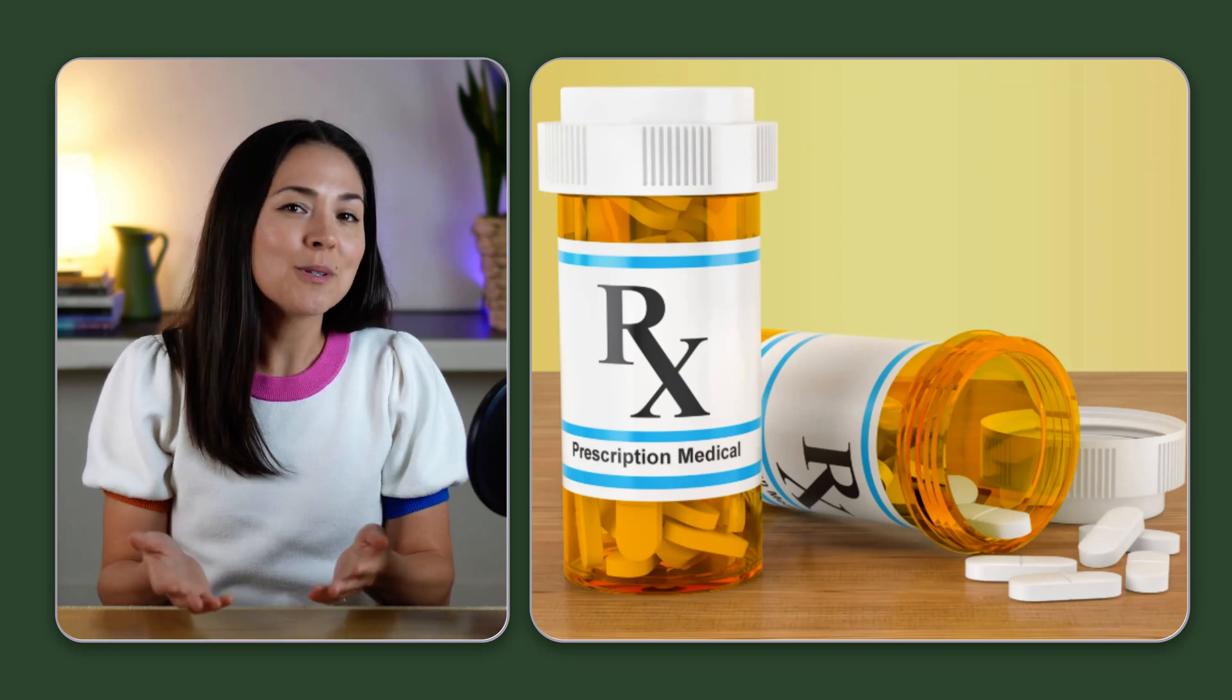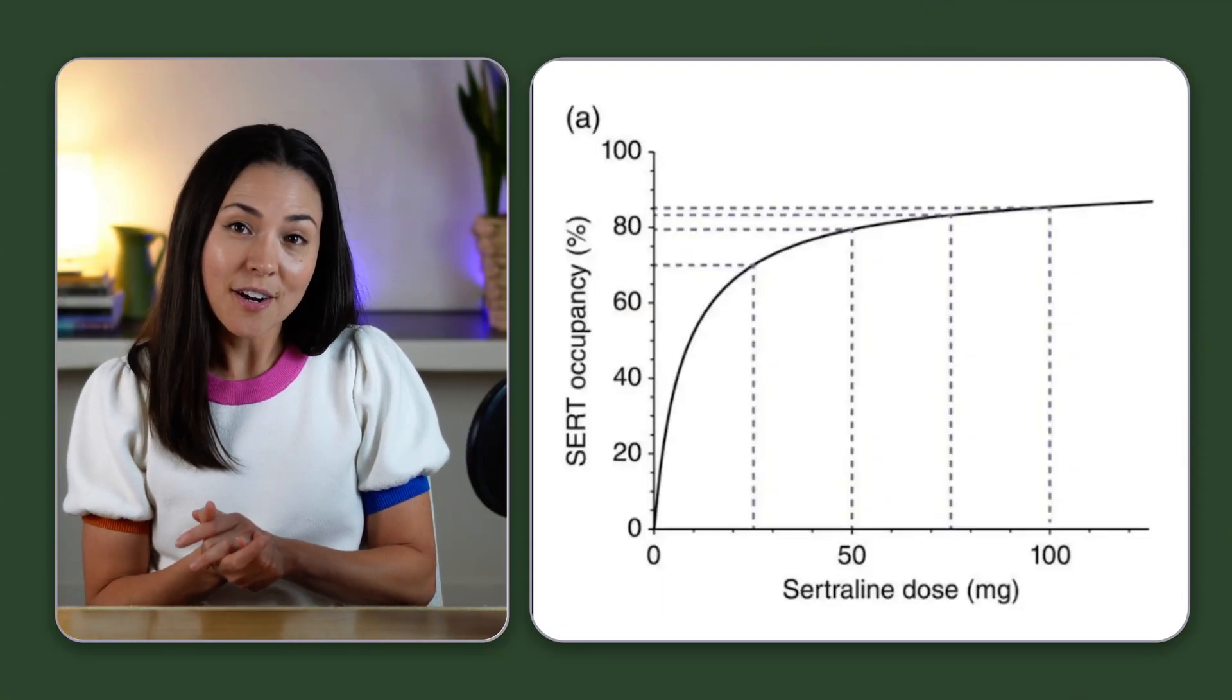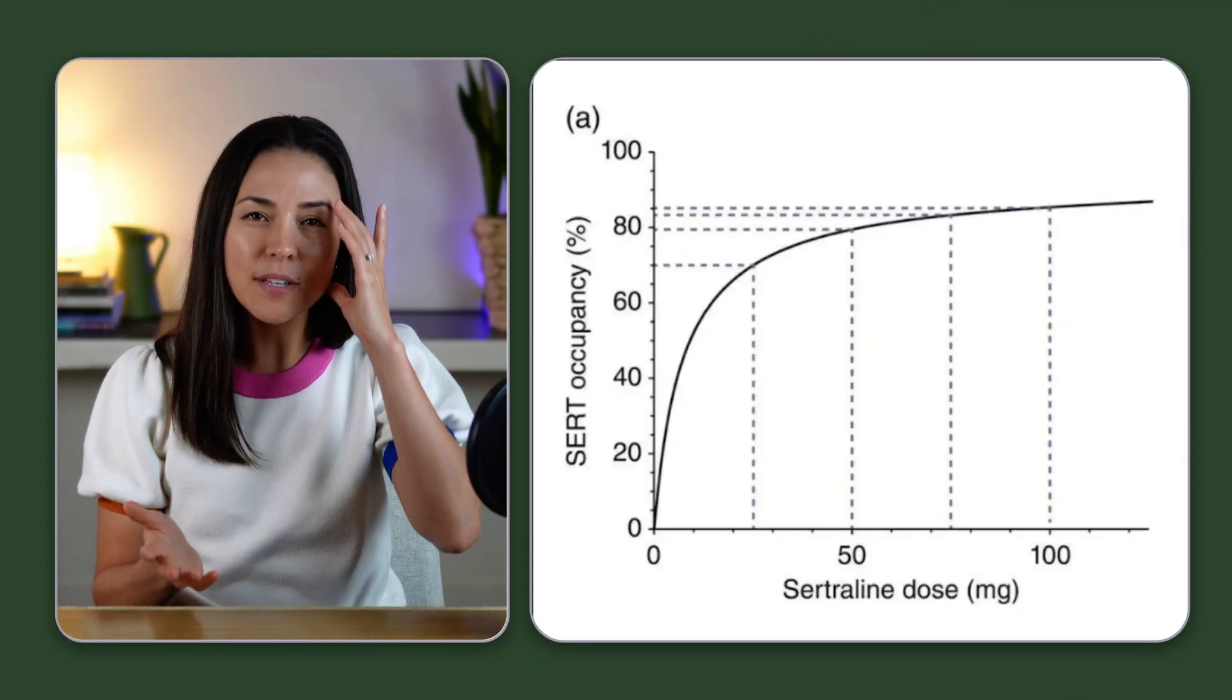And this is where most people's intuitions can lead them astray. The natural assumption is that tapering should be linear. And most people want to make only small adjustments in the beginning. But when you look at the SERT occupancy curve, you can see why that doesn't really make sense or work.